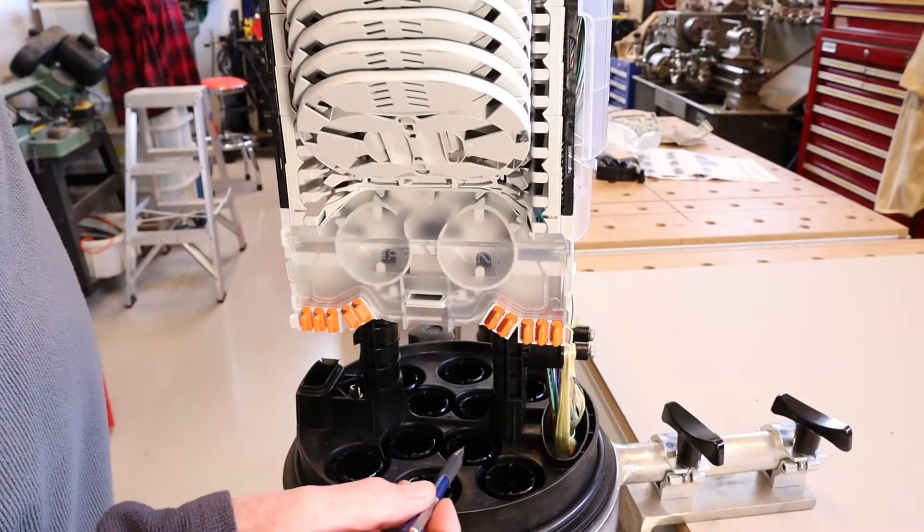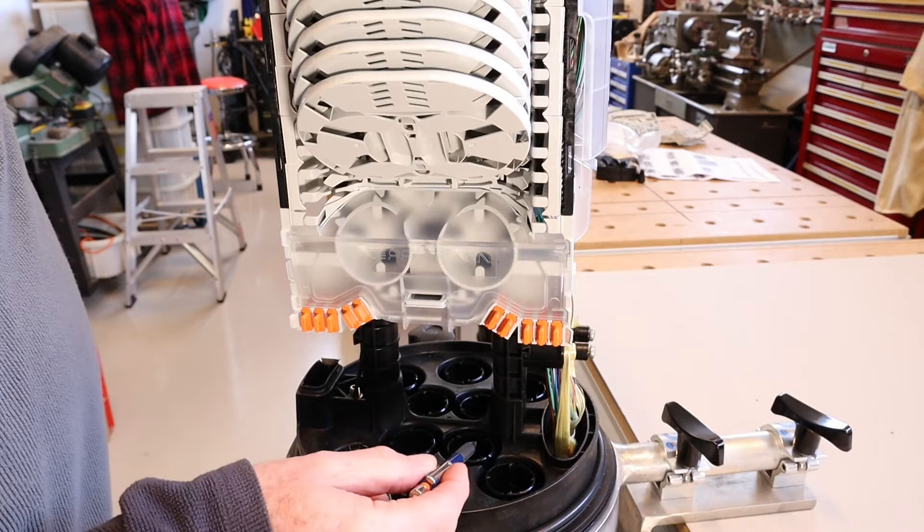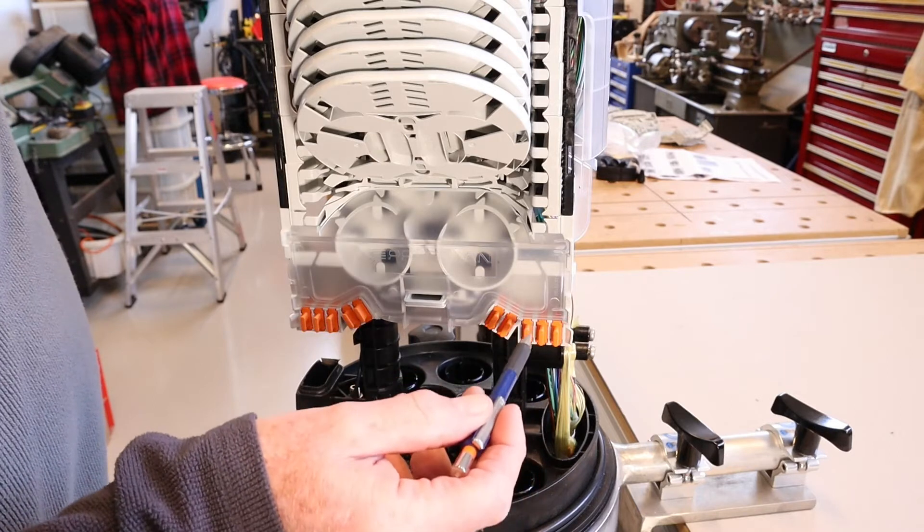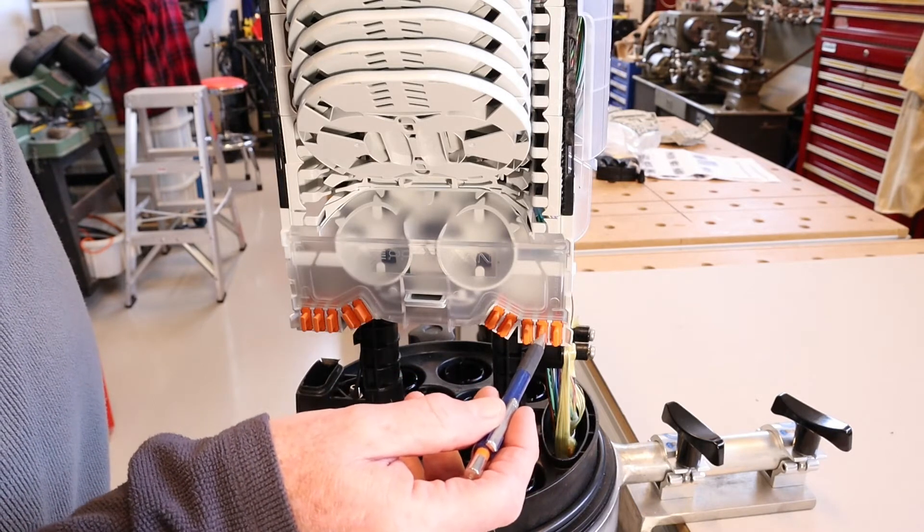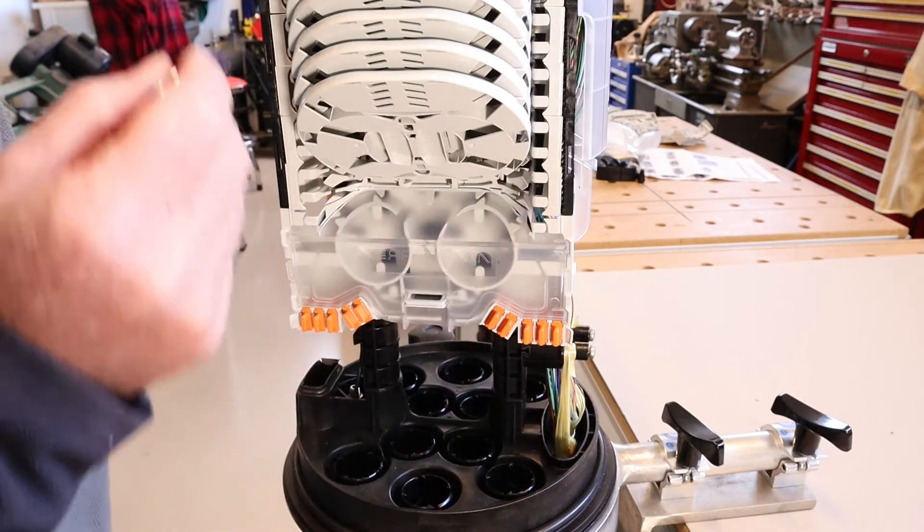So in practice the fibers come up through the glands here and then they route up through these retaining parts here and into the raceways either side.